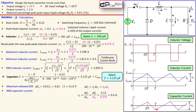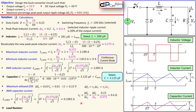The final component value is the load resistor R, which is determined by the output voltage and output current: 15 divided by 2 equals 7.5 ohms. This is the minimum allowed load resistance. Going below this would require more current to sustain 15 volts at the output, which is not allowed, so the resistance must be 7.5 ohms or higher.